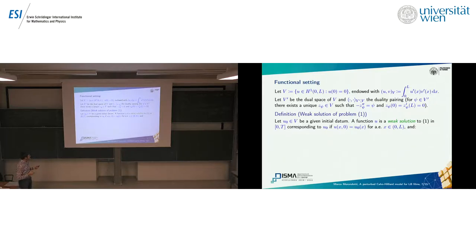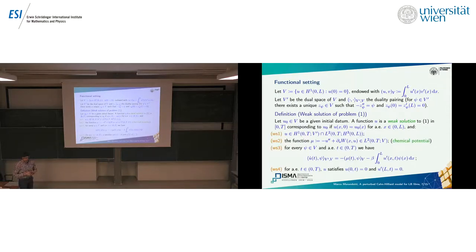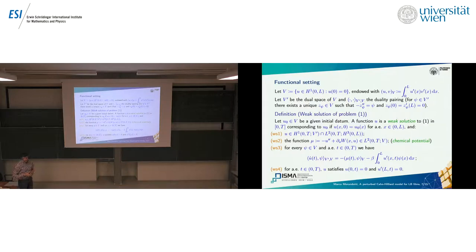We are now ready to give the notion of weak solution. Given an initial datum, a weak solution on a fixed time interval [0,T] is a function that attains the initial datum at time zero and enjoys four properties: a regularity statement — the function needs to be in H¹ with values in V' and L² with values in H³; the chemical potential mu is of class L²; and the equation is satisfied in the suitable weak sense, testing in V and V'. The boundary conditions are attained by the solutions.